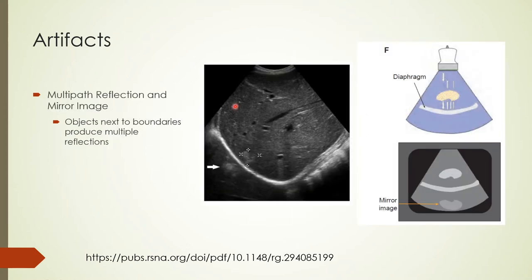Mirror image artifacts are multi-path reflection artifacts. When a highly reflective boundary is close to the imaged object, multiple reflections between the boundary and the object appear to come from a deeper structure, mapped on the other side of the boundary, creating a mirror image. Reflections from each surface of the object strike the boundary and return to the transducer, mapped symmetrically.